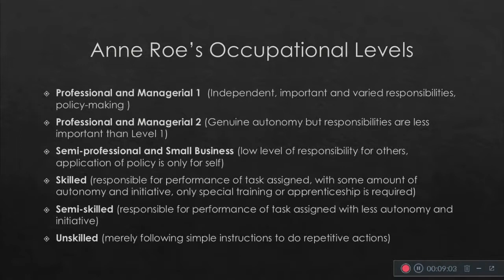Second would be professional and managerial level two — genuine autonomy, but responsibilities are less important than level one. We can say that professional and managerial level one includes people like the director of a company or CEO, then professional and managerial level two would be senior operations manager, operations manager, or coaches in business.